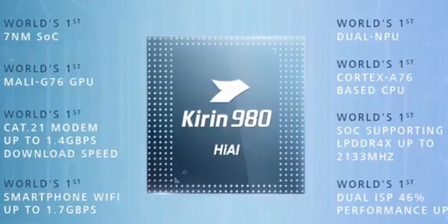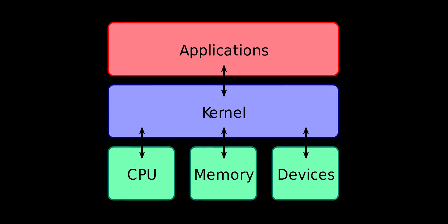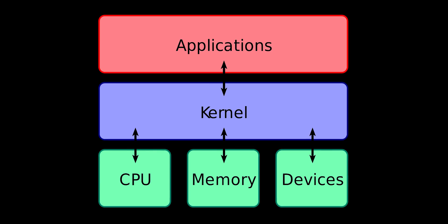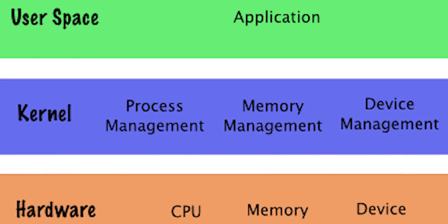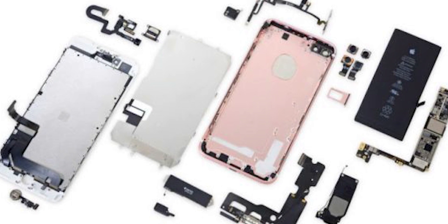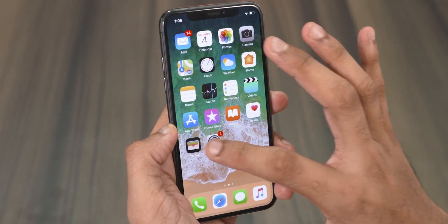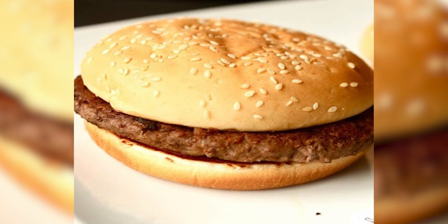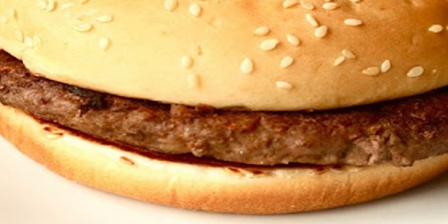So where does the difference lie? To explain that, we need to look at how an operating system works. At the bottom we have the hardware level, on top of that the kernel, and on top of that the higher-level applications. For iOS, we have the core-level hardware, a hybrid Unix kernel, and on top of that the system and apps written in a programming language called C#. If this were a burger, we have just three layers — a patty in the middle and two buns.